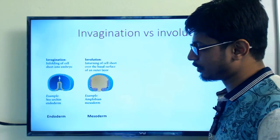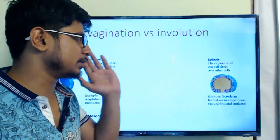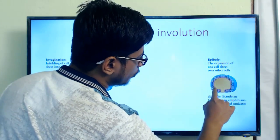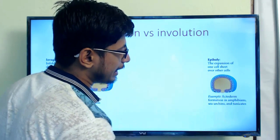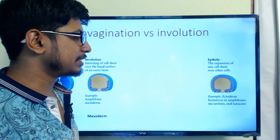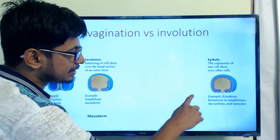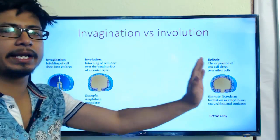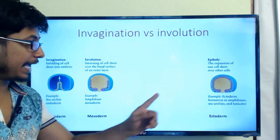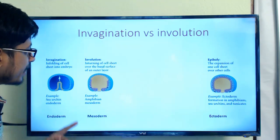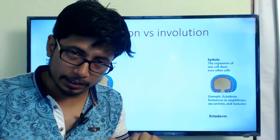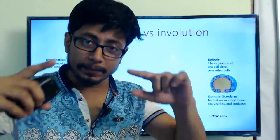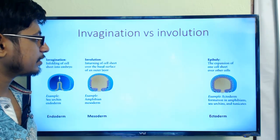The third type is epiboly. In epiboly, the ectodermal layer shown in blue slides outside of the endodermal layer, as seen in amphibians and sea urchins. This layer goes on to form the ectoderm. The difference from involution: in involution the ectodermal layer differentiates and mesoderm goes inside, while in epiboly the ectodermal layer moves outside over the mesodermal layer inside. The arrows showing the direction of movement make this distinction clear.